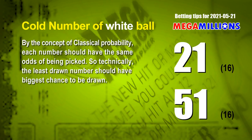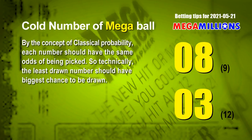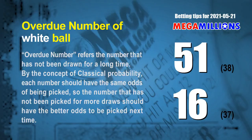We have two more tips: cold numbers and overdue numbers. By the concept of classical probability, each number should have the same odds of being picked, so technically the least drawn number should have the biggest chance to be drawn. The two coldest white balls are 21 and 51 — white ball 21 drawn only 16 times, white ball 51 drawn only 14 times, both in the last 371 draws. The two coldest Mega Balls are 08 and 03 — Mega Ball 08 drawn only 9 times, Mega Ball 03 drawn only 12 times in 371 draws.